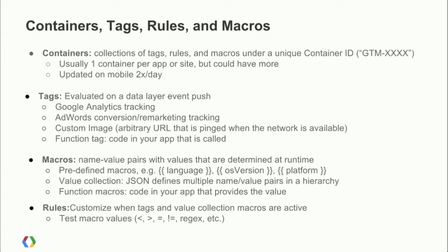Macros are name-value pairs whose values are determined at runtime. For example, predefined macros include the language the user has set, the version of the operating system, and the platform — are we on iOS or Android? These are values that can be retrieved at runtime and against which you can write rules. You can also use any of these macros within a tag. Another important predefined macro is the data layer macro, which retrieves a value from the data layer — so as long as your application has put it in the data layer, you'll have a macro that retrieves it.